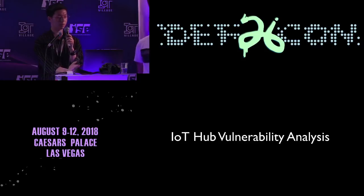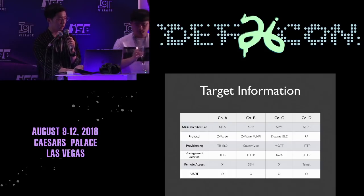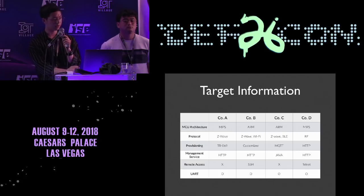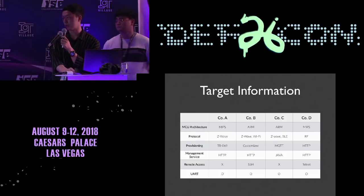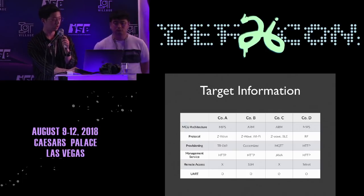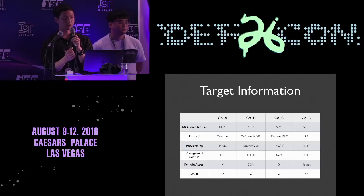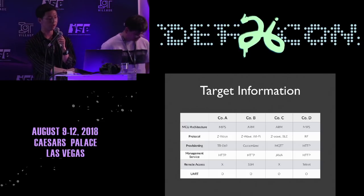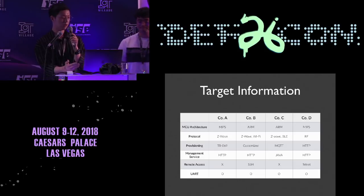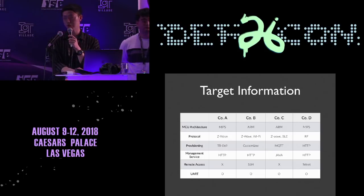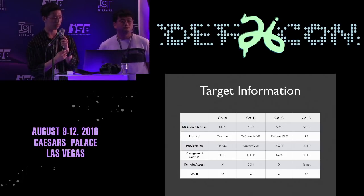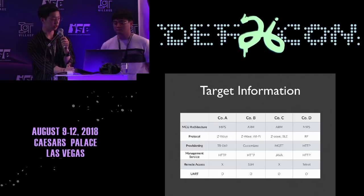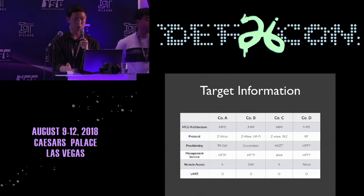We analyzed a total of four products. For each product, the MCU architecture is classified as ARM or MIPS. JetWave, Wi-Fi, Bluetooth, and RF are used for wireless communication. The IoT hub transmits device status information such as firmware info, certificates, and secret keys to the server via provisioning, enabling remote management including automatic updates, device registration, and communication with the mobile application. Company A uses TR069 — Customer Premises Equipment Wide Area Network Management Protocol, also known as CWMP. Company C uses MQTT, a machine-to-machine IoT protocol designed as an extremely lightweight publish-subscribe messaging transport.